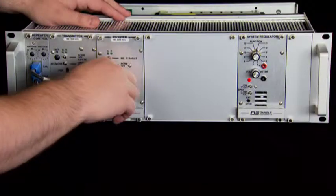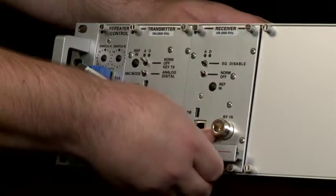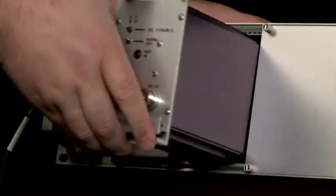Remove any RJ45 cables or RF cables connected to the receiver, then pull the receiver out of the sub rack.